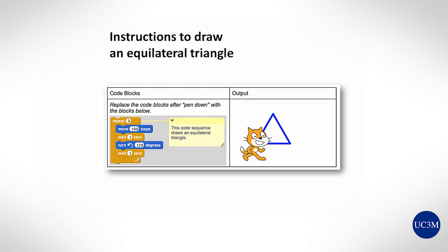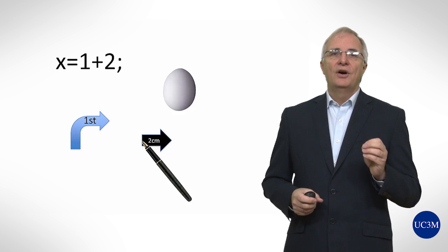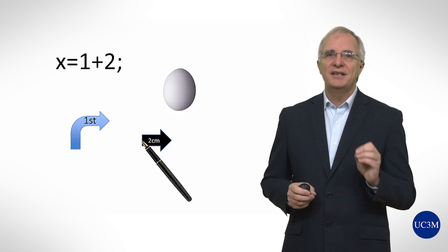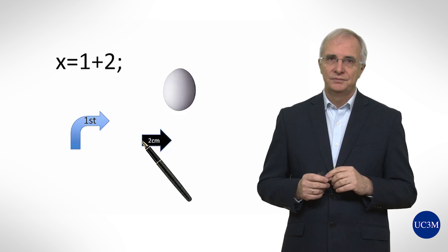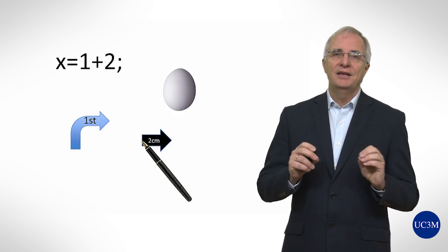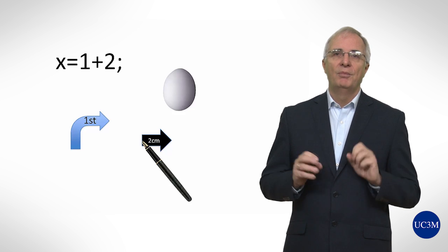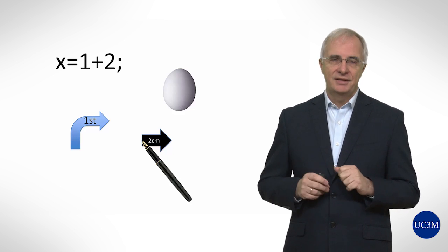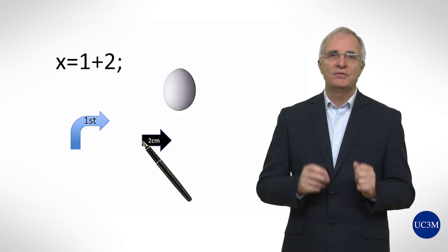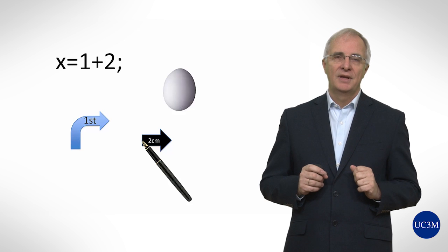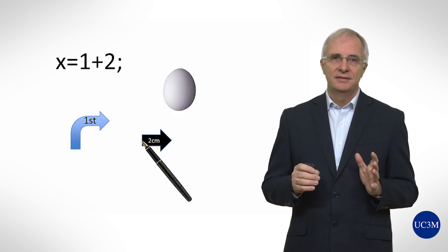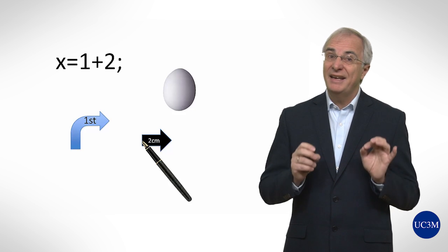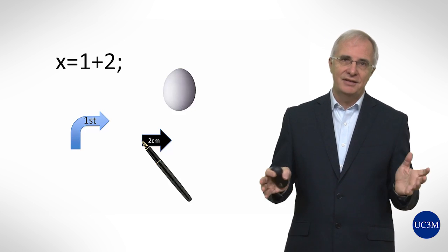A further example is a sequence of instructions to draw a figure: draw a line to the right 2 cm, turn right 90 degrees, etc. This sequence of instructions is our program. In each of these examples, we see that there is a set of basic instructions that are clearly executable. One instruction can be 'x equals 1 plus 2', or 'boil an egg', or 'take the first tree to the right', or 'draw a black line of 2 cm from the current point to the right'. The set of instructions has to be well-defined, and each instruction has to be effectively executable by the entity in charge — in this case, our computer.